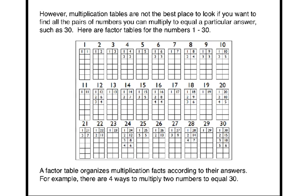However, multiplication tables are not the best place to look if you want to find all the pairs of numbers you can multiply to equal a particular answer, such as 30. Here are factor tables for the numbers 1 through 30.